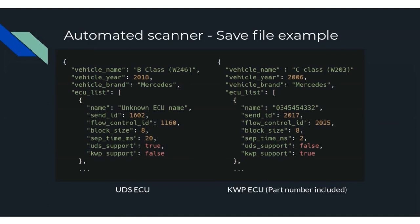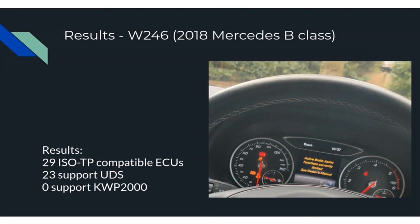Looking at scan results: for a 2018 Mercedes W246 B-Class, I found 29 ISOTP-compatible ECUs, of which 23 support UDS and zero support KWP2000. As you can see from the image, the car was very unhappy during the scan — this is why I tell the user not to panic at the start screen. Everything returns to normal a few seconds after the ECUs go back to their normal state. For my own Mercedes W203 2006 C-Class, I found 14 ISOTP-compatible ECUs — none support UDS (expected given its age) and 13 support KWP2000. For a Lexus NX300H, I only found two ISOTP-compatible ECUs, both supporting UDS.